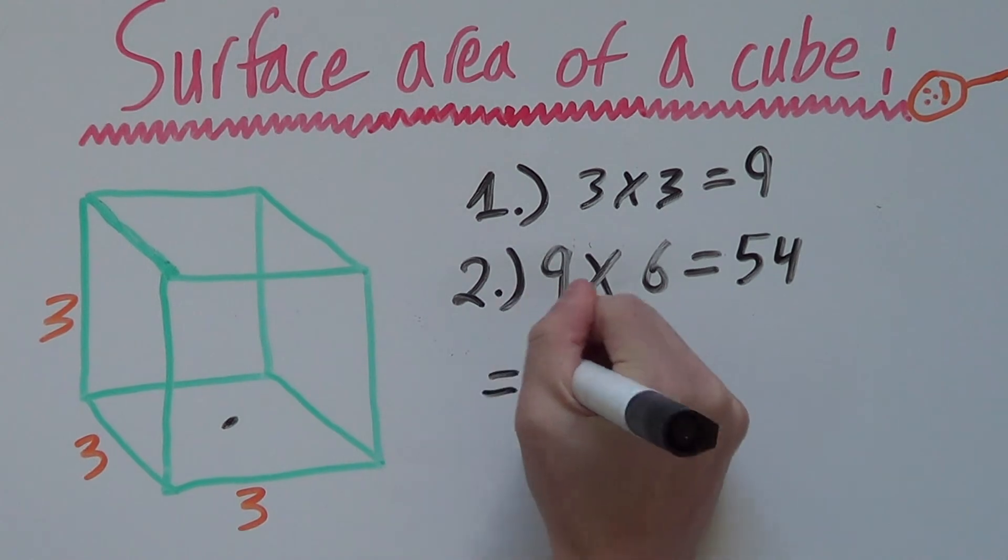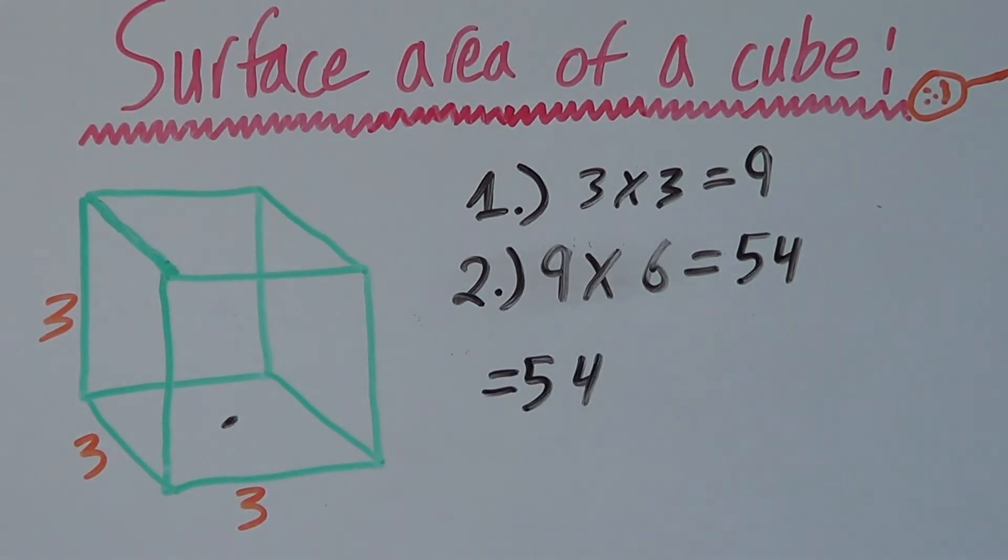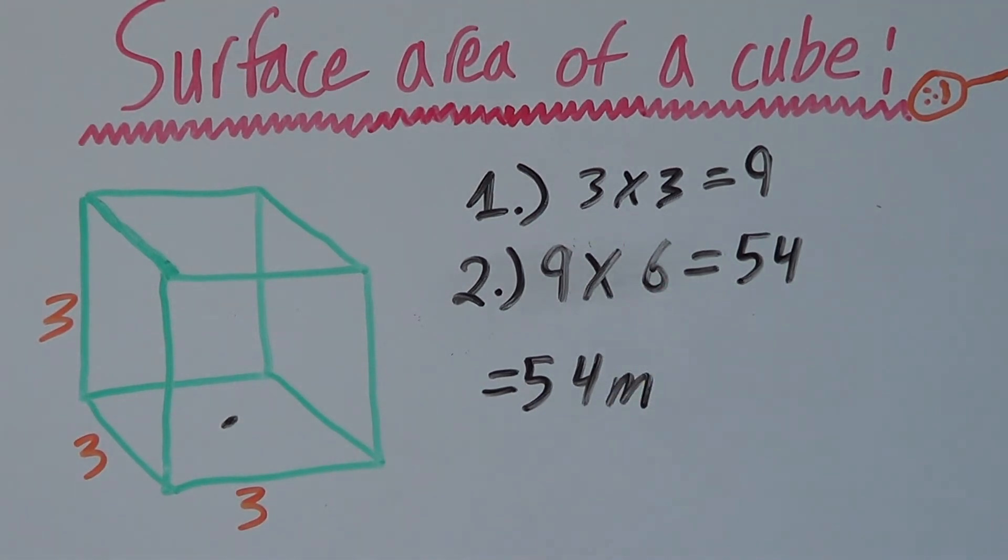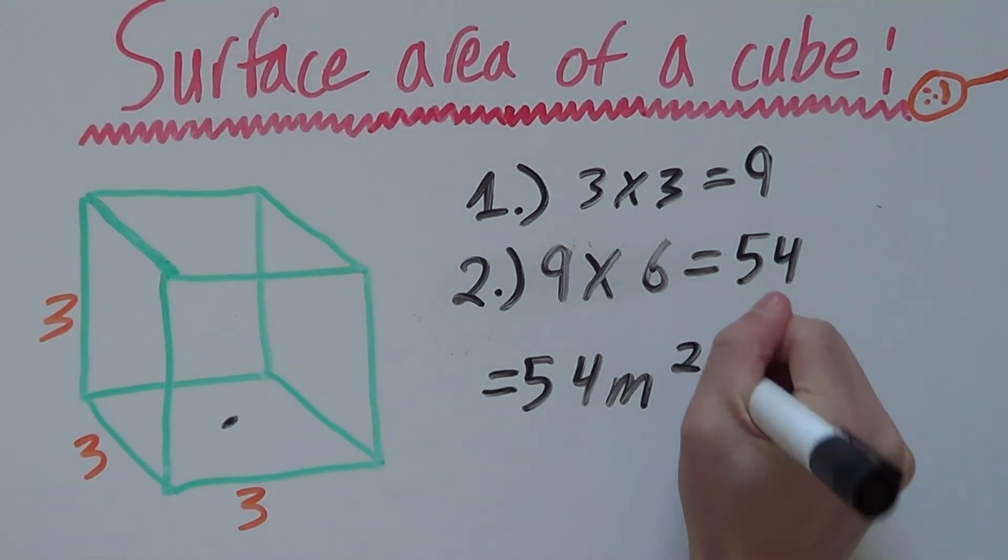Nine times six is fifty-four. So the surface area of this cube equals fifty-four whatever unit you're using. Let's say meters. And since it's still area, we say squared.